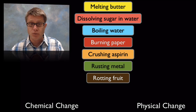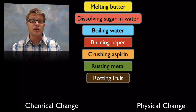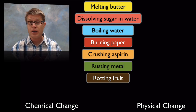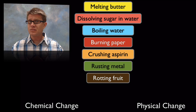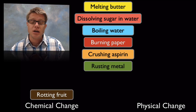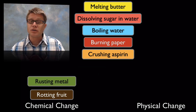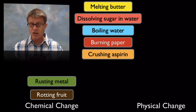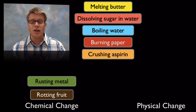Let's start with rotting fruit. Do we have production of gas? Maybe. Do we get a change of color? For sure. Is it easy to go from rotting fruit back to fruit? Not really. So we would call that a chemical change. What about rusting iron, or rusting a metal? We would call that a chemical change. Evidence: we see a change in color, and when things rust there's actually a change in heat as well. And it's hard to reverse that. So that would be a chemical change.